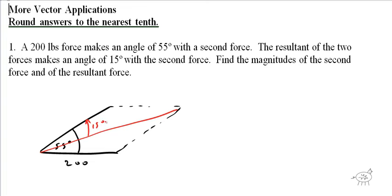Let's find the magnitudes — we'll call this X and this Y. We just need to know our properties of parallelograms. So this is 200 over here. Remember, that's 15 degrees and that's 55 degrees. Consecutive angles of a parallelogram are supplementary, so this angle is going to be 180 minus 55 degrees, which is 125 degrees.